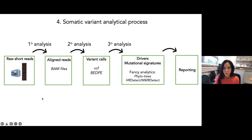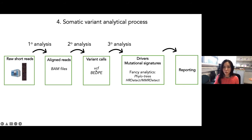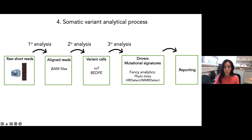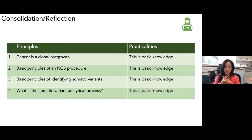Key terminology: primary analysis takes raw reads to aligned reads stored as BAM files. Secondary analysis goes from aligned reads to somatic mutations, stored as VCF files. Tertiary or downstream analysis is when you do your fancy work — finding drivers, doing signatures, building phylogenetic trees. These are the different levels of analysis. The key principles to understand: cancer is a clonal outgrowth; you understand the NGS procedure; and you understand the somatic variant analytical process.